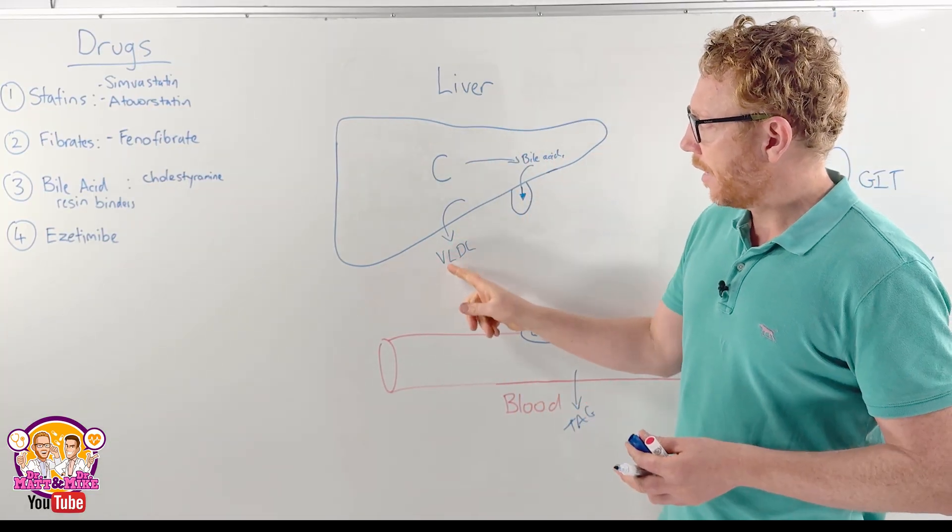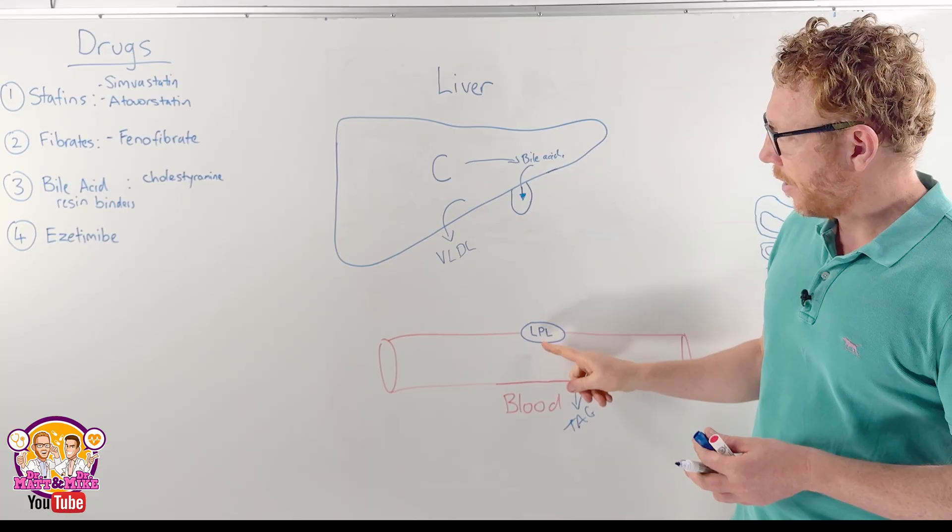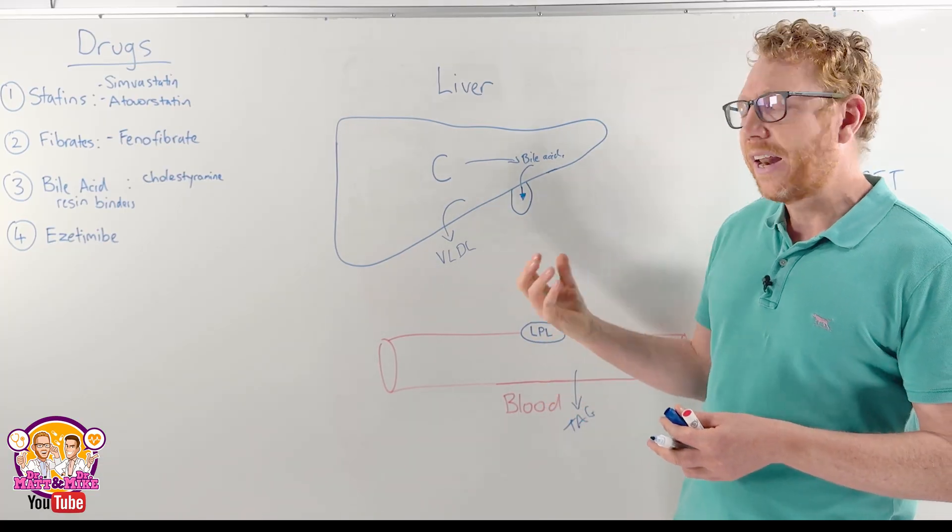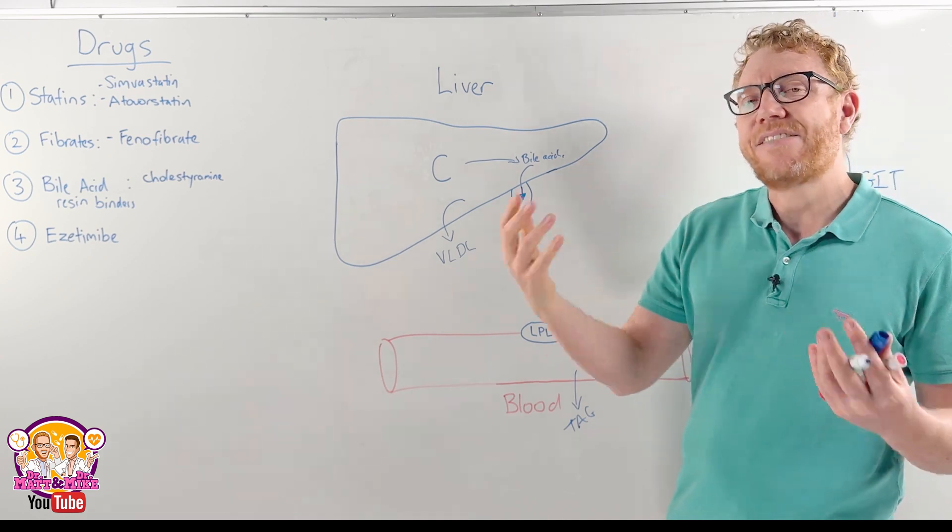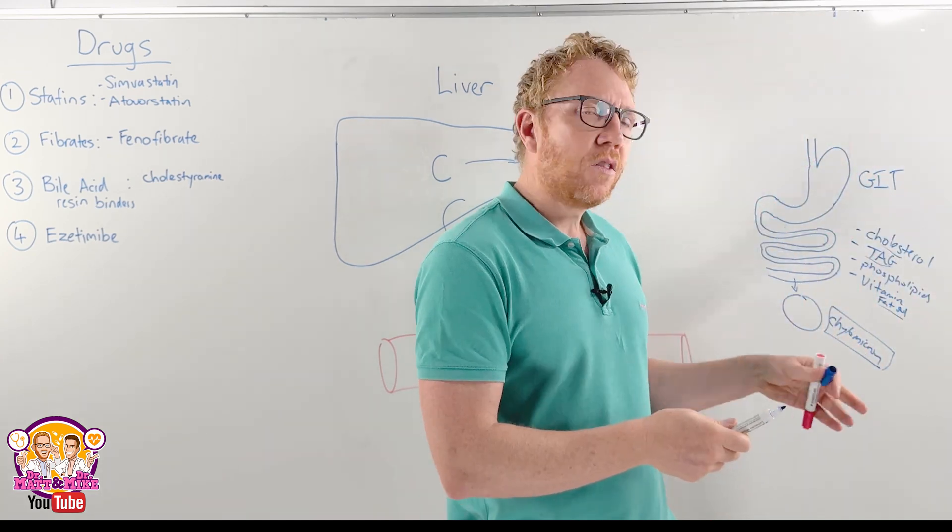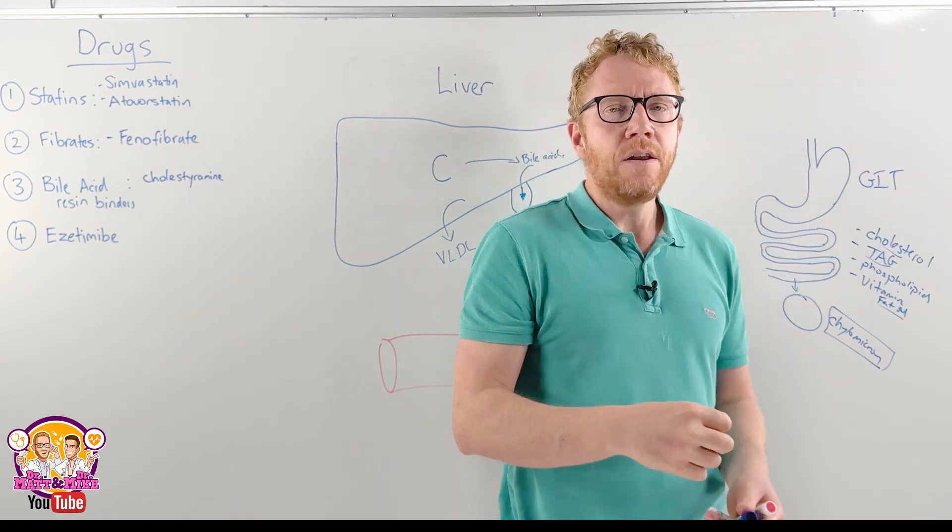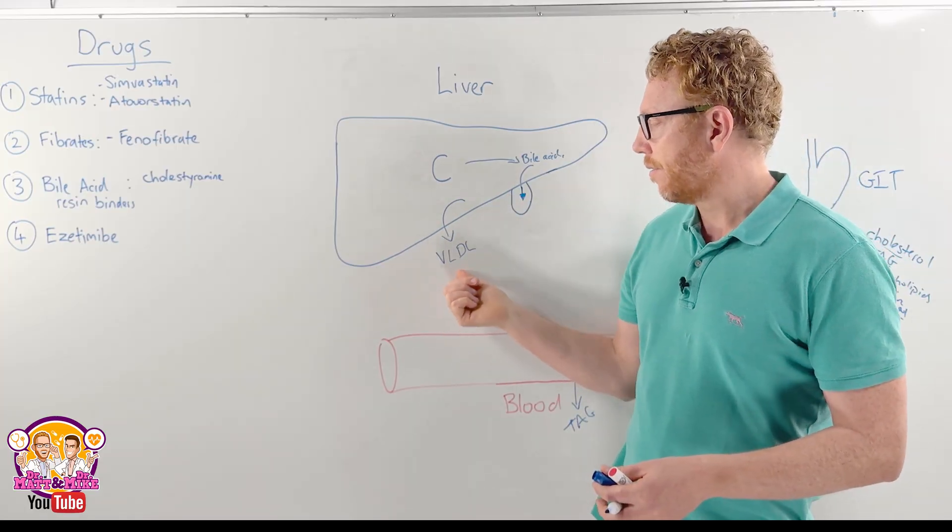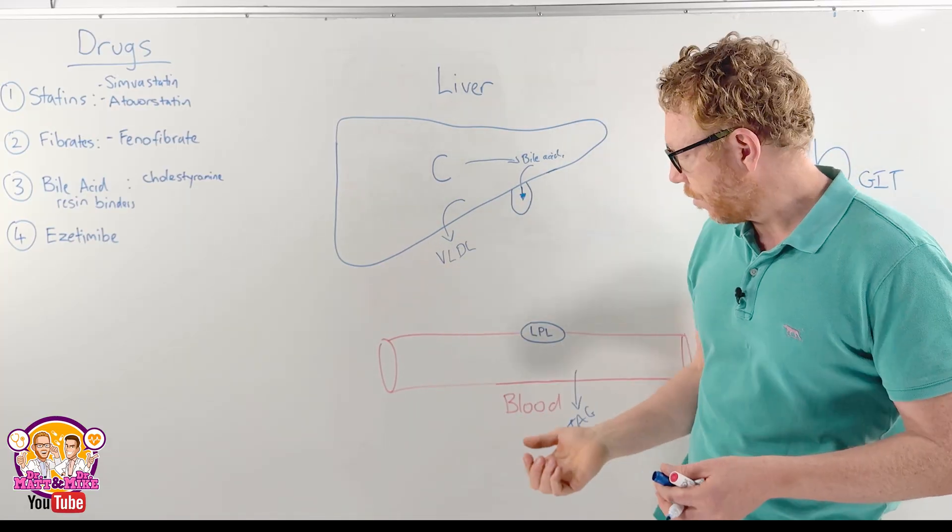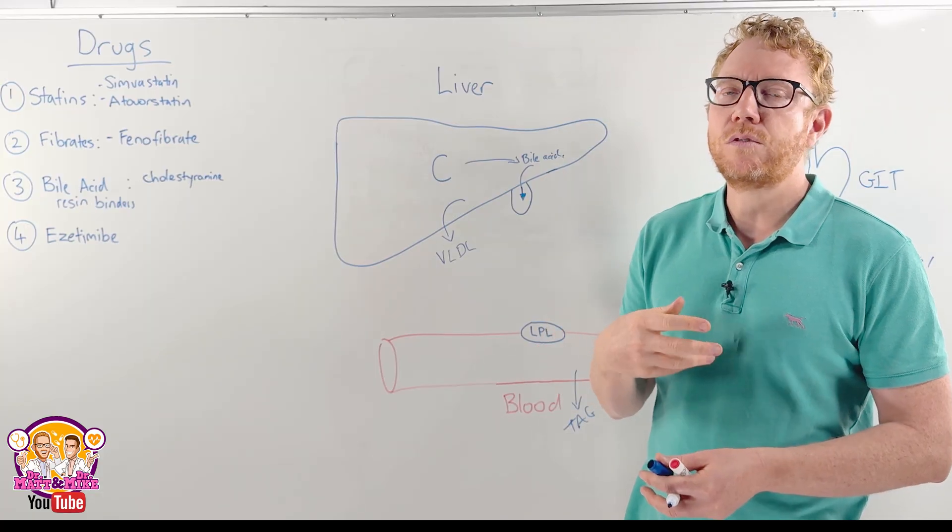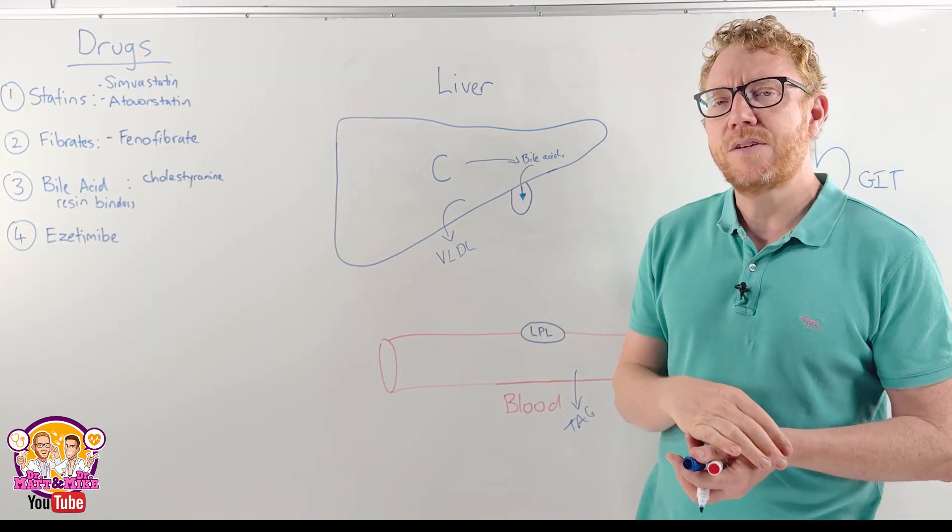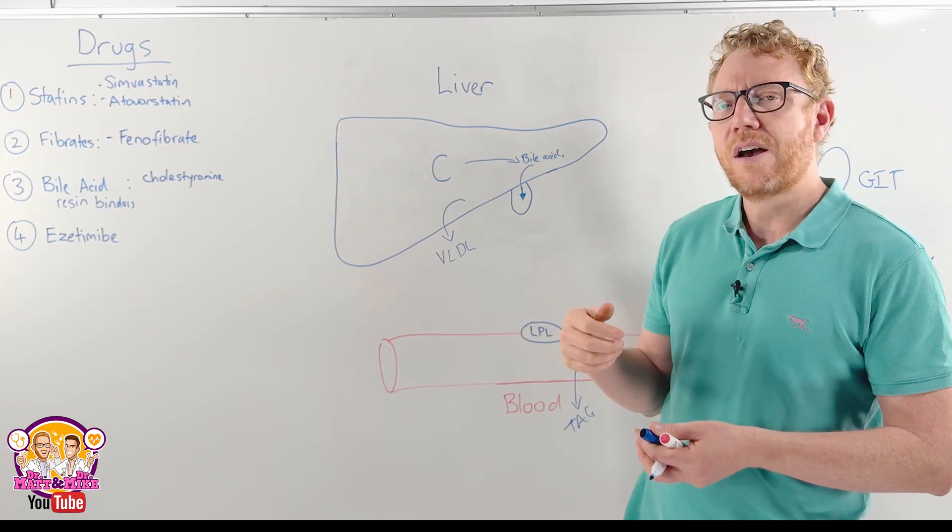So the VLDLs then go into the blood, encounter again the lipoprotein lipase, that enzyme that pulls the triglycerides out of it. This could be in a fasting state, whereas the chylomicrons would be in a fed state after we've eaten. So in a fasting state, the VLDLs can be useful for again muscles, so we can use fatty acids for muscles for exercise and energy metabolism, but also the heart can also utilize fatty acids.